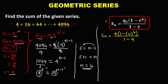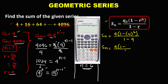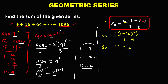Then to simplify, the sum equals 4 times 1 minus 4 to the power 6. Now 4 to the power 6 equals 4,096. So this is 4 times (1 minus 4,096), all over 1 minus 4, which is negative 3.